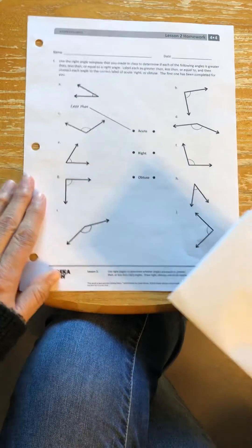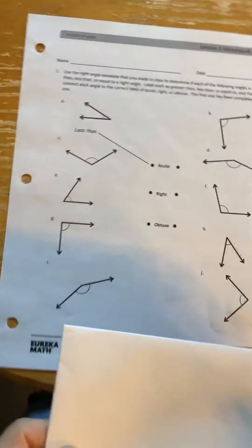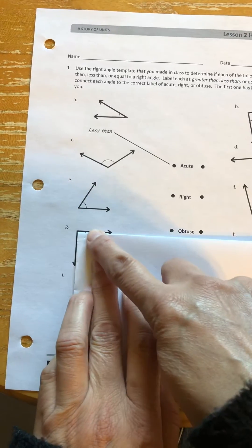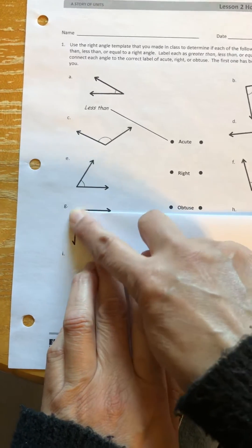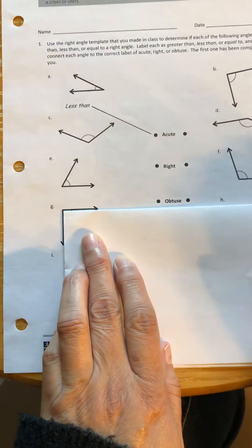For example, I have this angle here. Can you zoom in closer a little bit? If I line up my template and the angle fits nicely alongside my template here, then this is exactly a 90-degree angle, and this is a right angle.